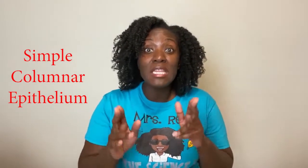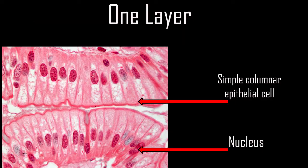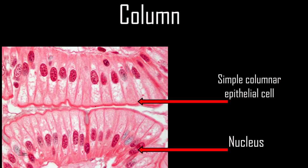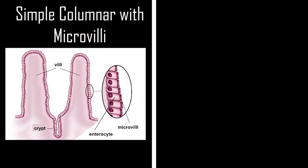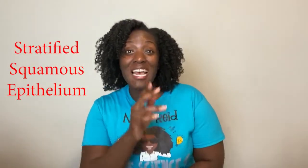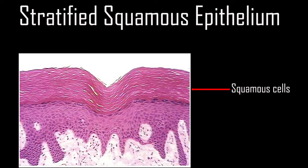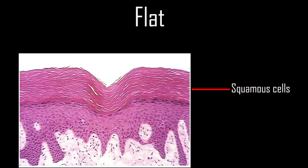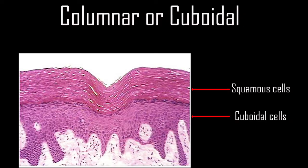Simple columnar epithelium has one layer and long epithelial cells that resemble columns. Just like simple cuboidal epithelium, this tissue helps with secretion and absorption, but you will find ciliated columnar epithelium in the fallopian tubes and columnar epithelium with microvilli in the stomach and intestines. Stratified squamous lines the epidermis and protects your skin from abrasive surfaces. It has multiple layers of flat cells, but not all layers may be flat — since the surface has squamous cells, we call it squamous, but deeper layers can be columnar or cuboidal.